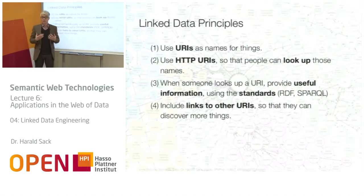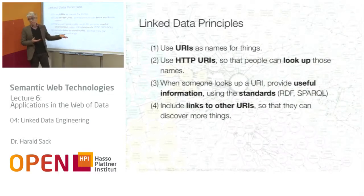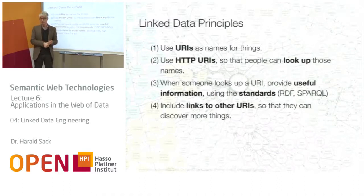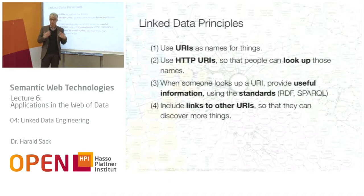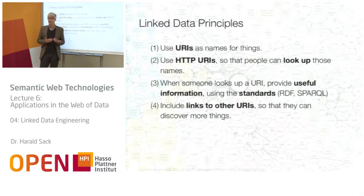These are called the linked data principles — how should I publish linked data? There are four points. First, use URIs for names and things. Second, use HTTP URIs so people can look up those names and they are dereferenceable. Third, when someone looks up a URI, provide useful information using W3C standards — meaning RDF and SPARQL. Fourth, and most importantly, include links to other URIs so that one can discover more things.